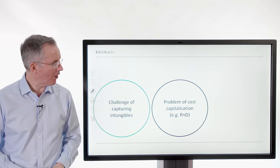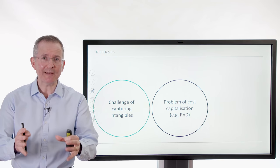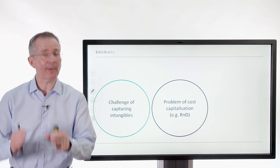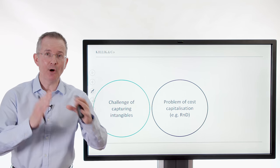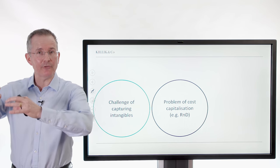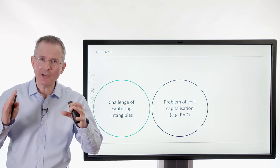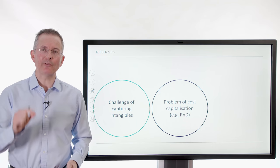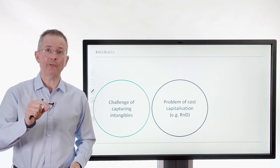Then there's the problem of cost capitalization. Research and development costs, under some circumstances without getting into the technical stuff here, you can put those on the balance sheet. In other circumstances you write them off against profits. There's a bit of subjectivity there and that decision will influence the size of your book, which influences the price to book ratio.